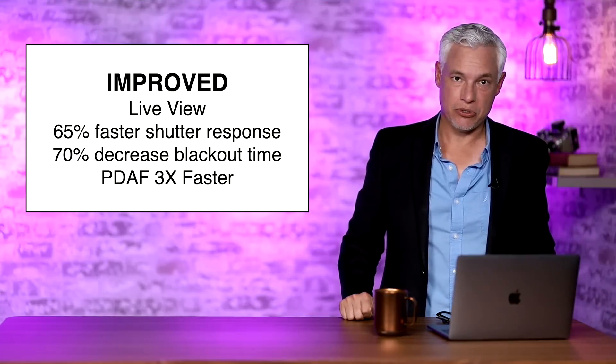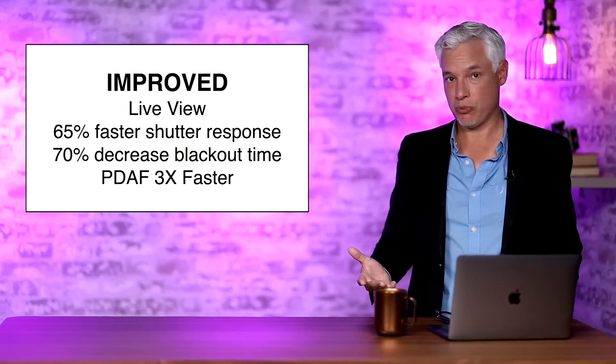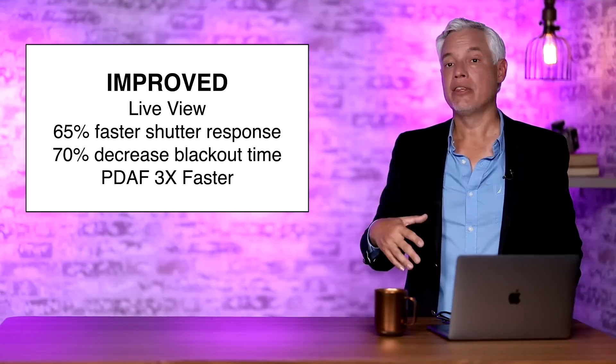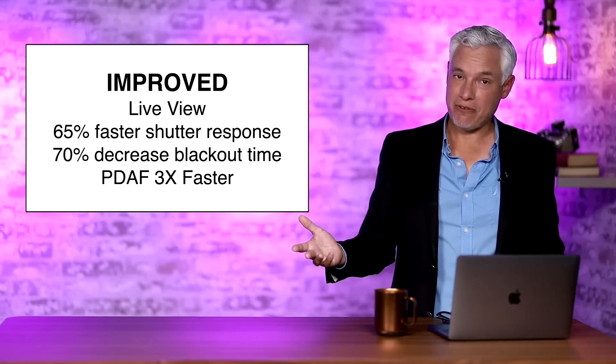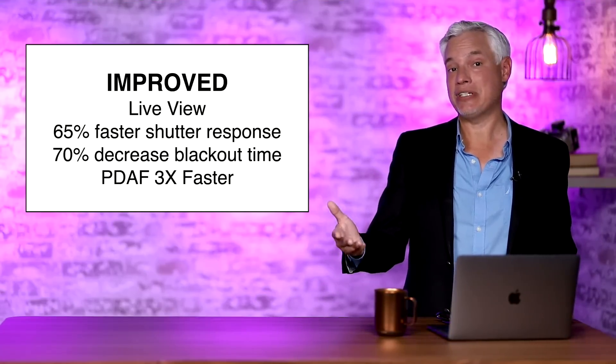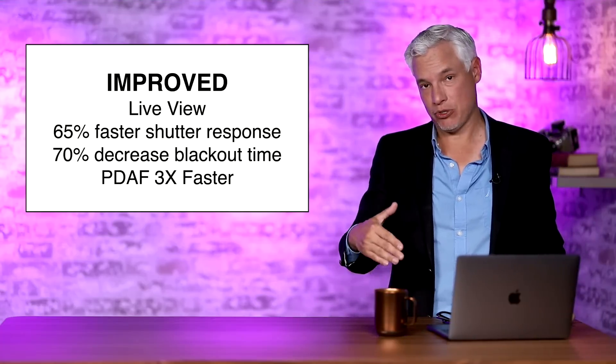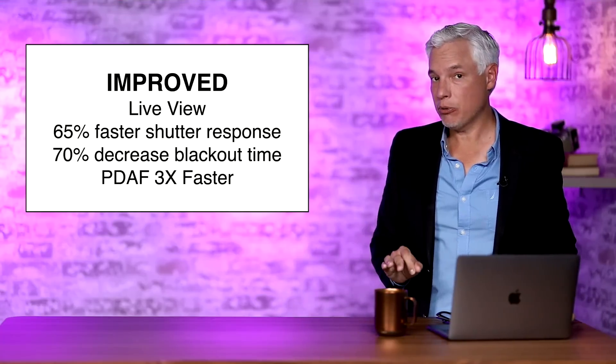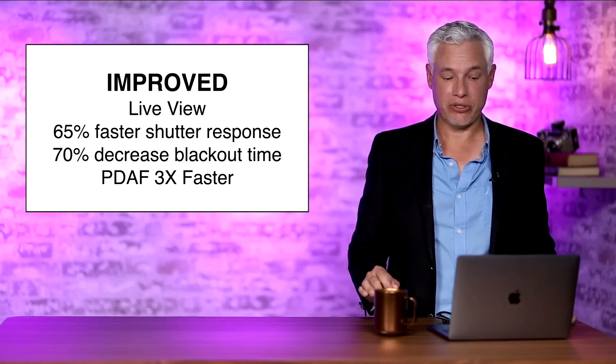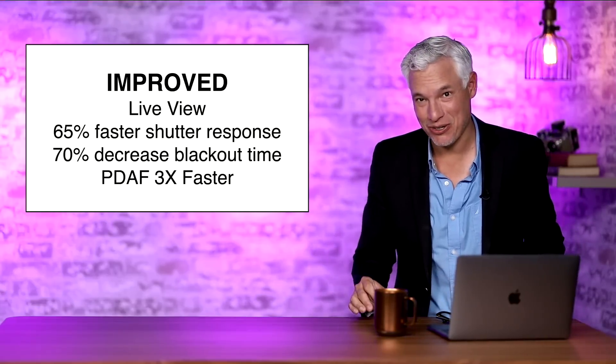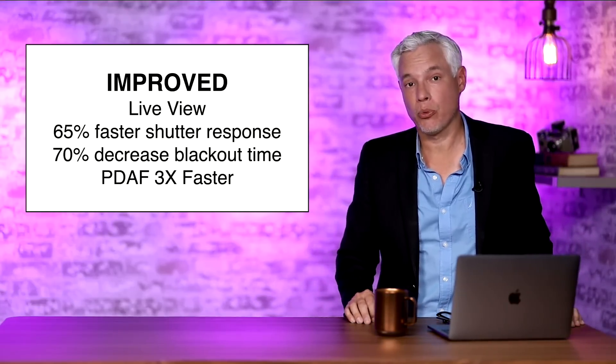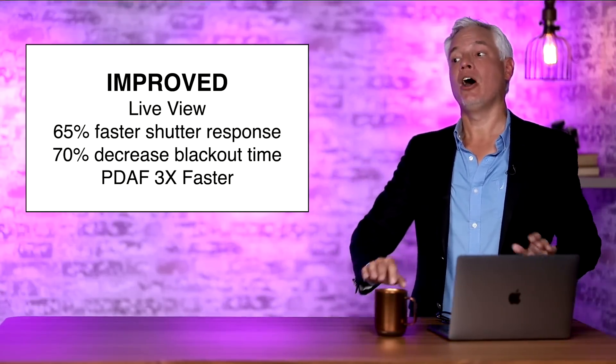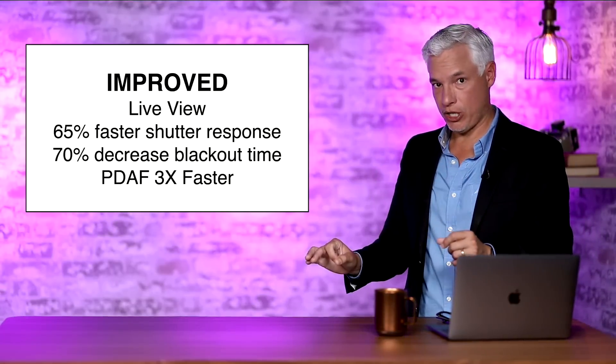The leaked Hasselblad documents are saying that live view performance is improved. It was a little laggy on the X1D. The shutter is said to also be 65% faster, so I'm glad to see they're improving that. And the blackout time has decreased by 70%. The most important thing, this implements phase detect autofocus. That should be about three times faster than the X1D, which had a more primitive focusing system.